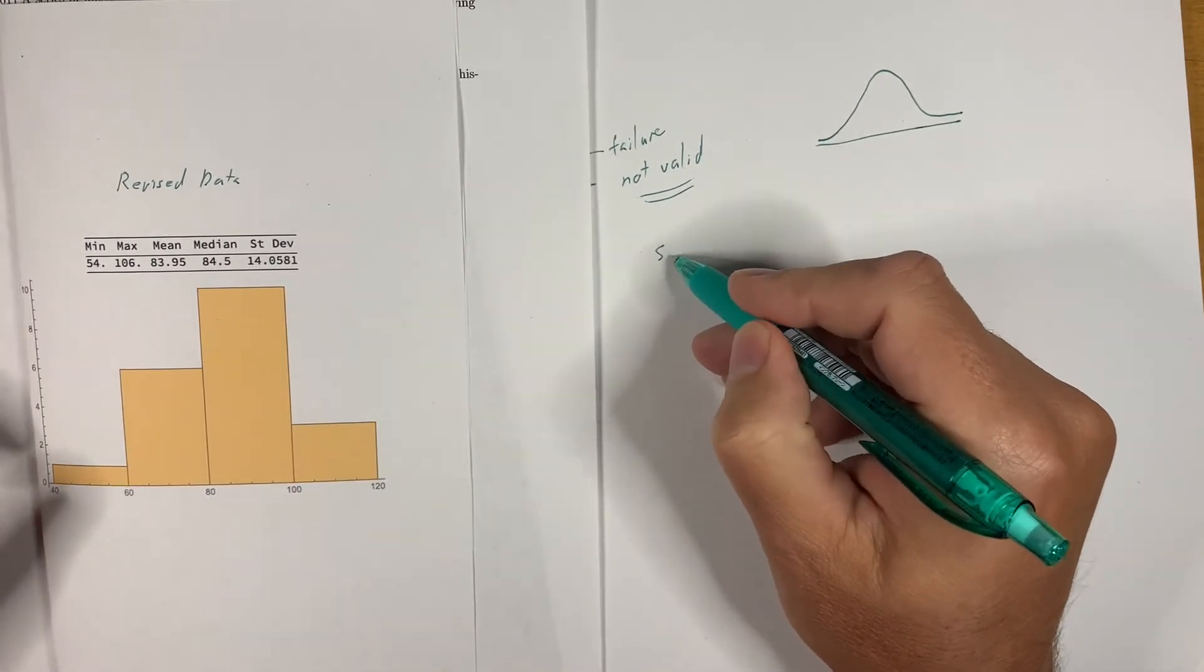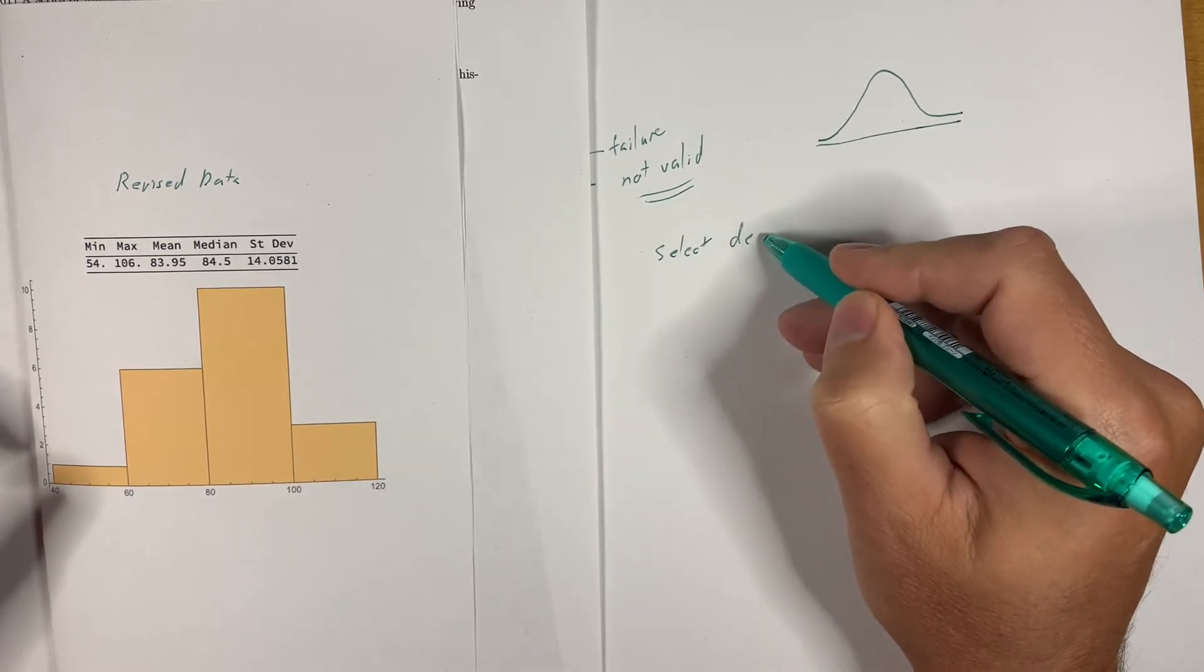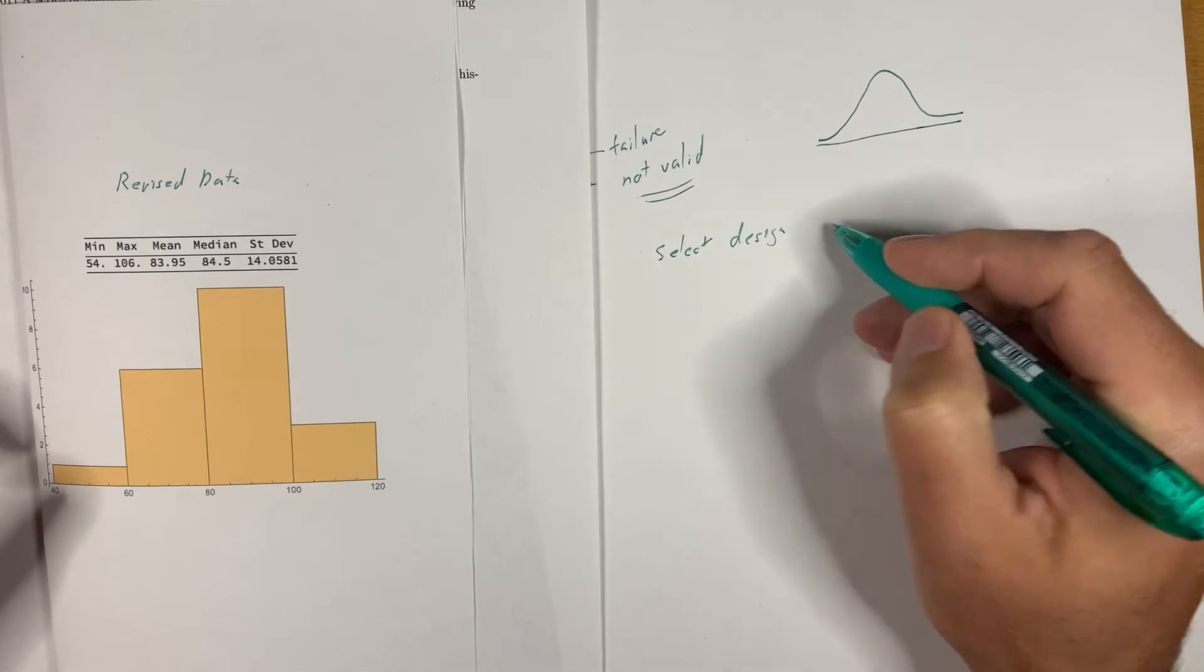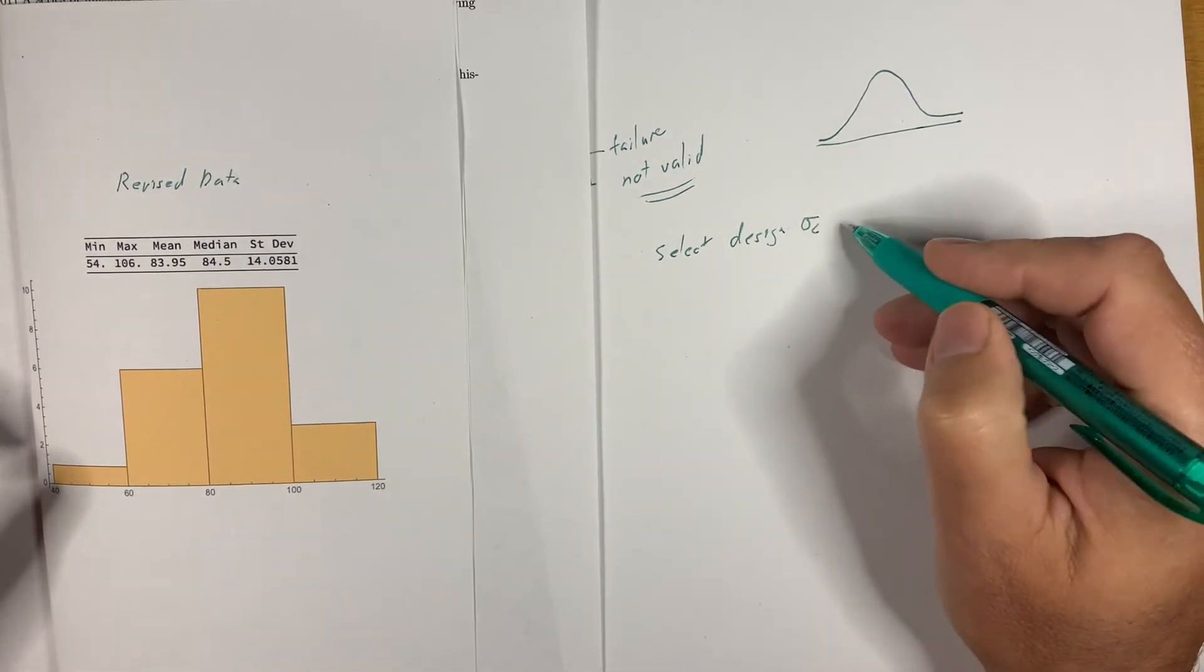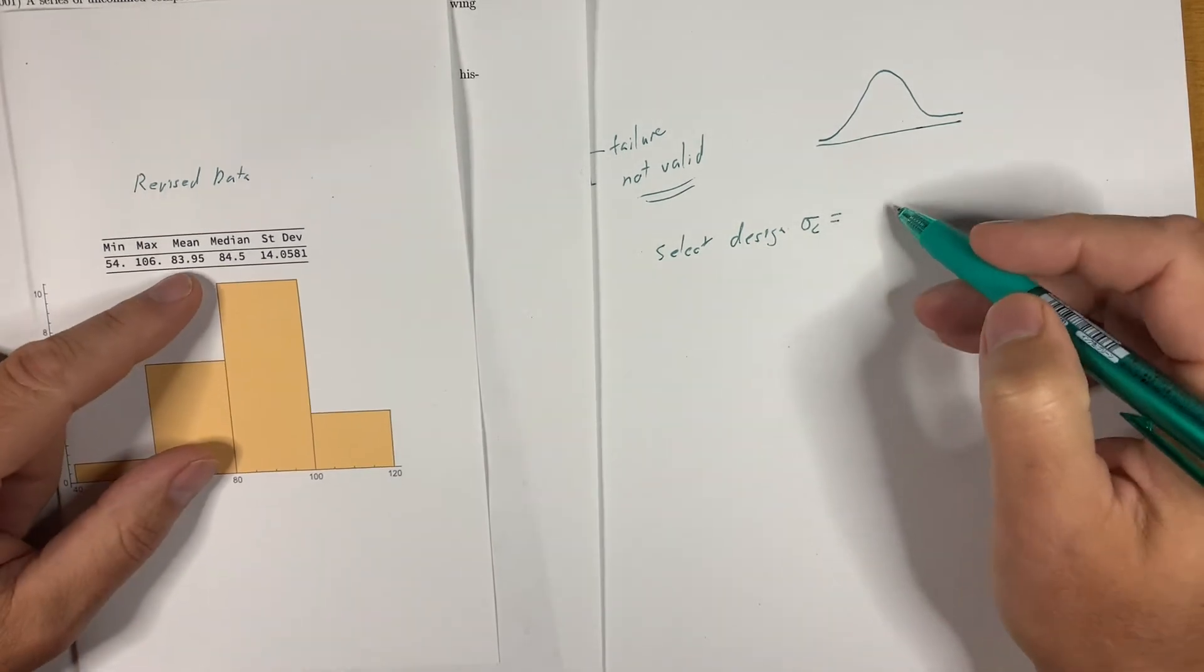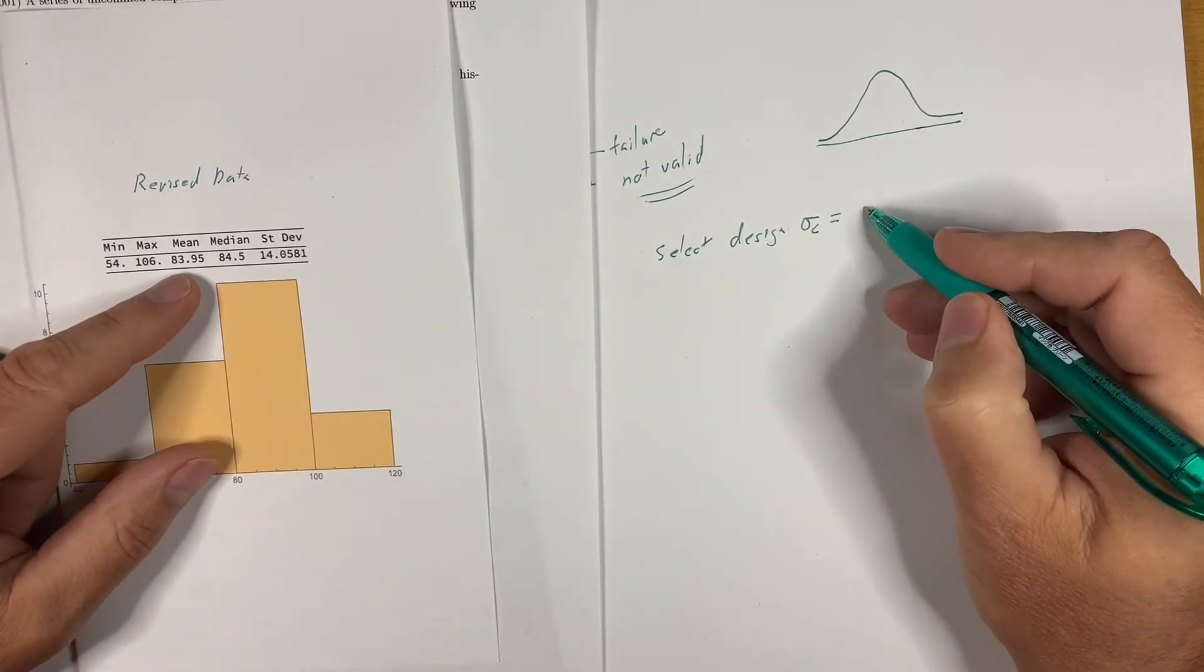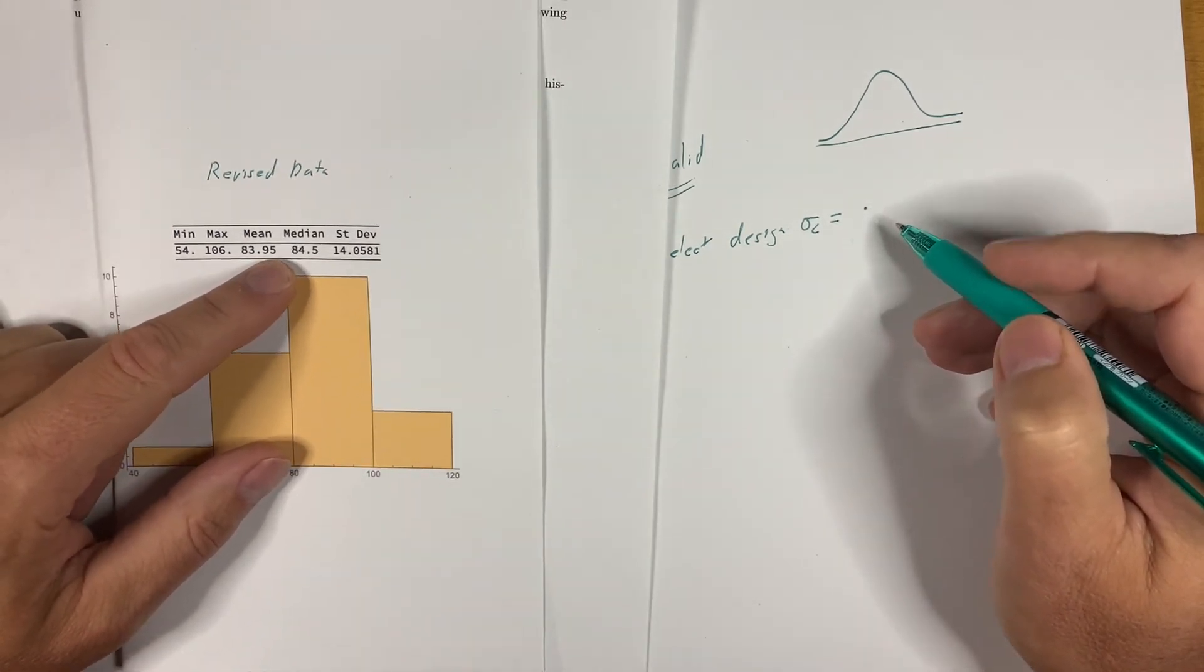So we will select a design sigma C of the mean value. So it could be 83.9, but it's 84 MPa.